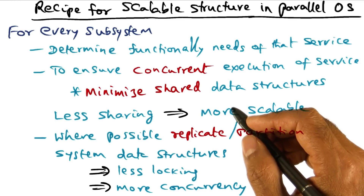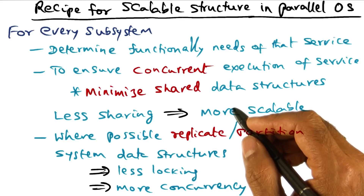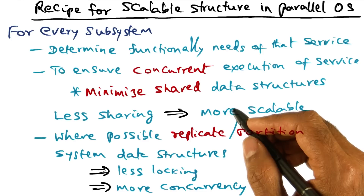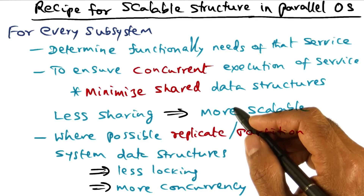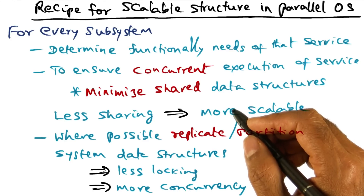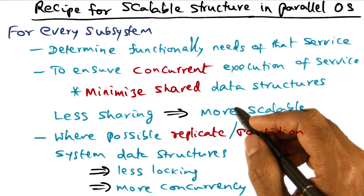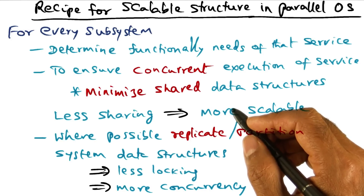But at the same time, if we say let's take this page table data structure and replicate it on all the nodes of the multiprocessor, that probably is not a good idea either, because then the operating system has to worry about the consistency of the shared data structure copies existing on all the processors and keeping them up to date all the time.